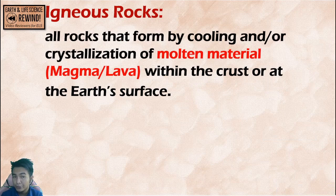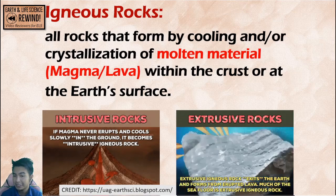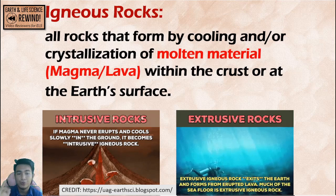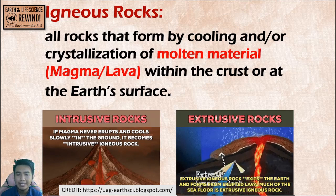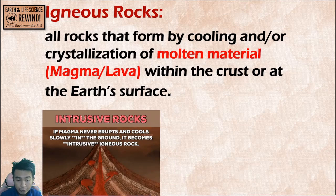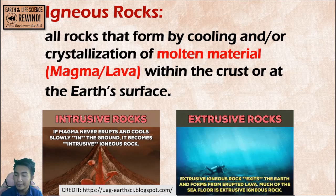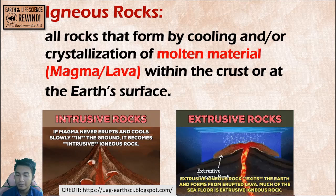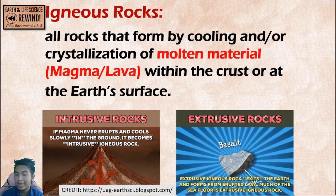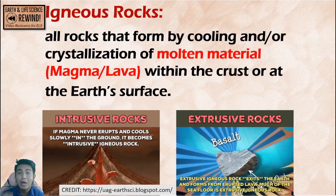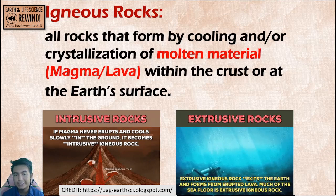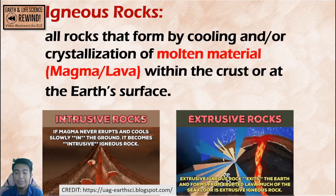All igneous rocks are formed from molten material — either magma or lava. Between magma and lava, there are two kinds of igneous rocks. Intrusive means the magma never went out of the crust and cooled underground — intrusive means inside. Extrusive is when molten material releases outside the crust and forms as a rock — extrusive means outside.